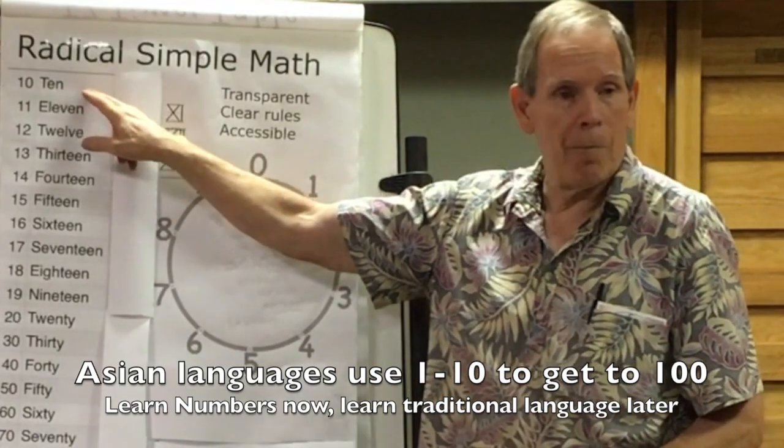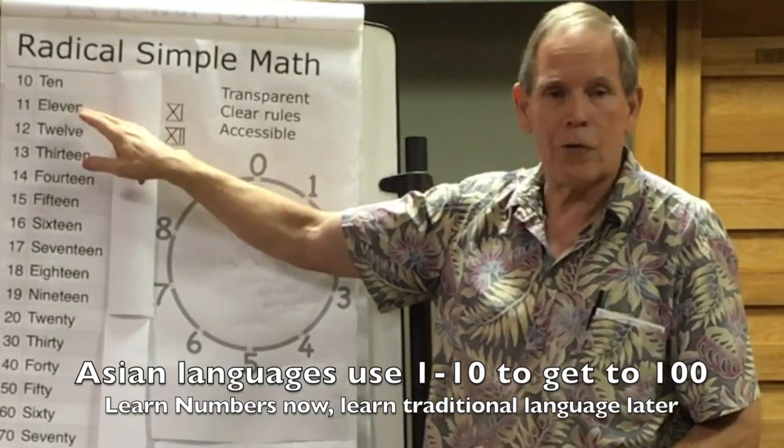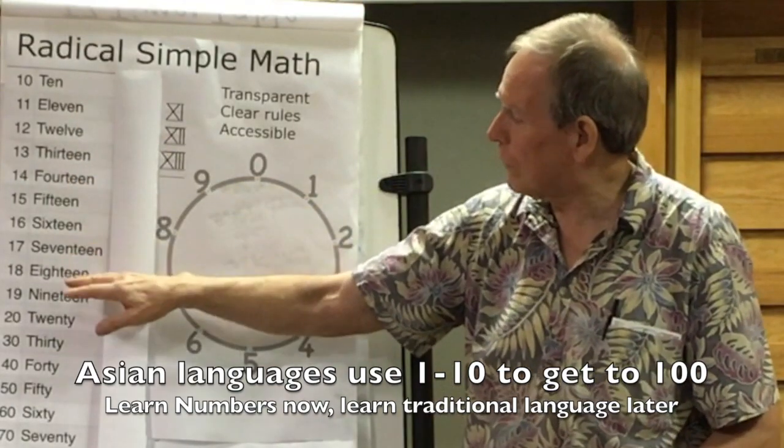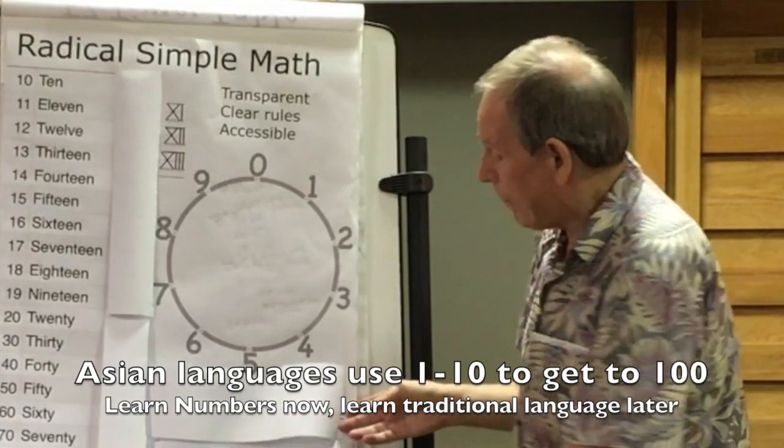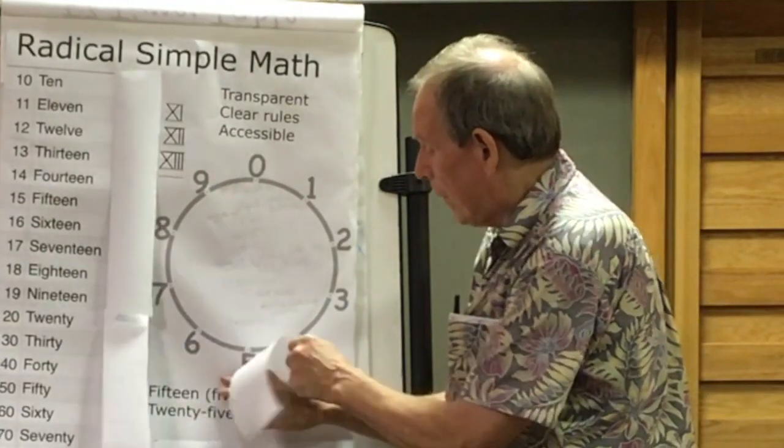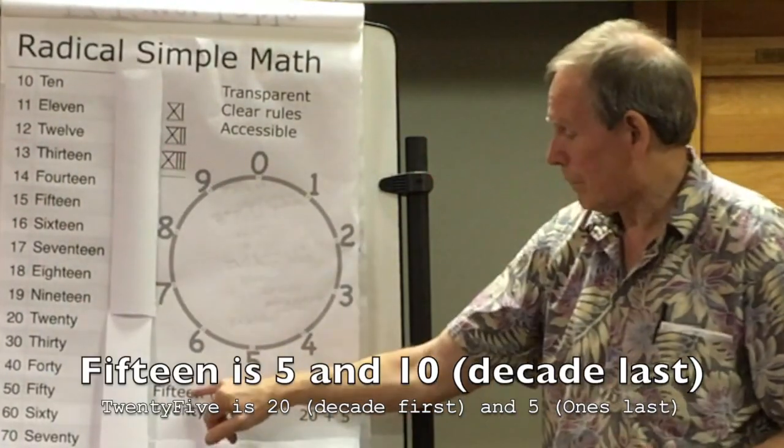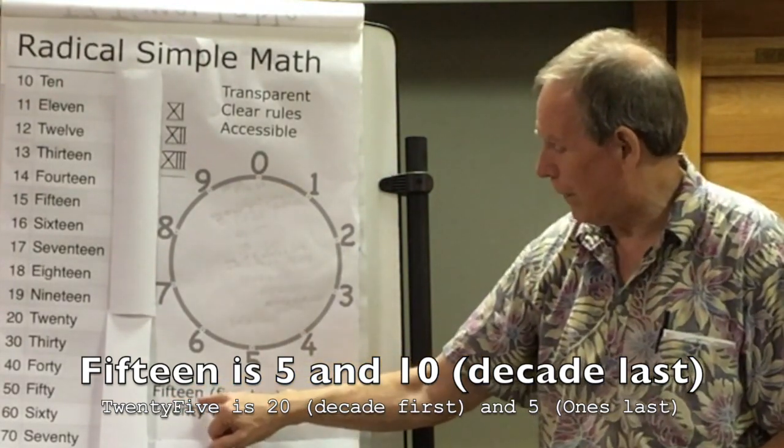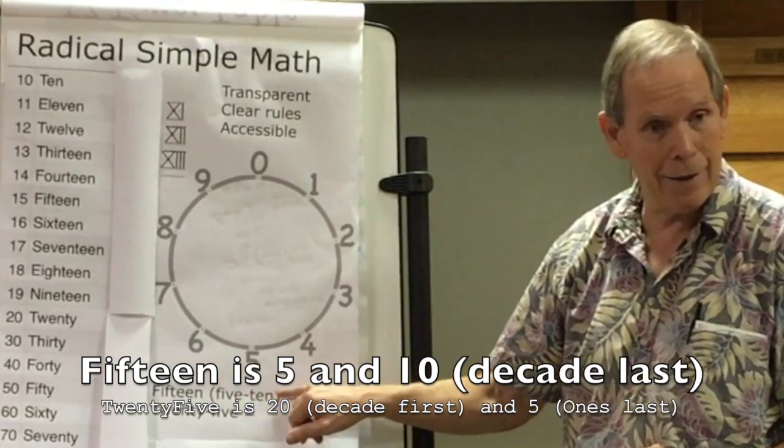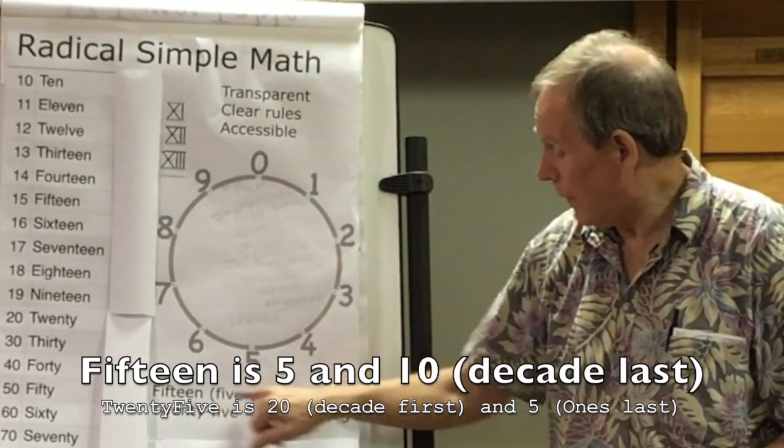After ten, we have all these words: eleven, twelve, thirteen, fourteen, fifteen, sixteen, seventeen, eighteen, nineteen, twenty. And by the way, what happens is when we get to twenty, we reverse it. Fifteen is sort of a crazy way to say five and a crazy way to say ten. Five and ten is fifteen.